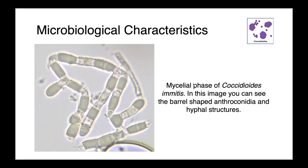Here you can see the mycelial phase of Coccidioides imitis. In this image, you can see the very classical barrel-shaped arthroconidia. These structures are the infectious stage of the organism — this is what is inhaled and ultimately causes infections.